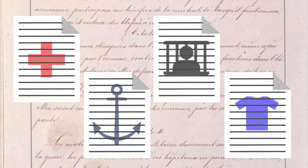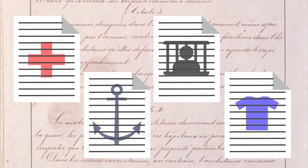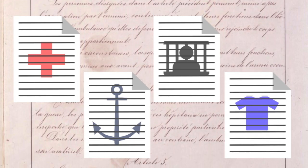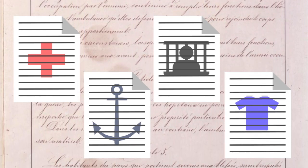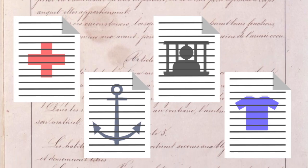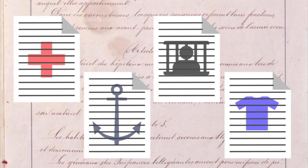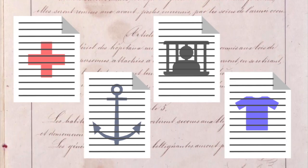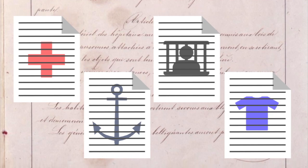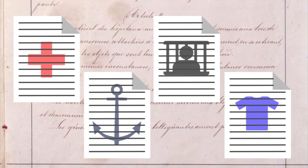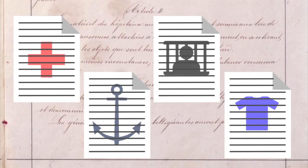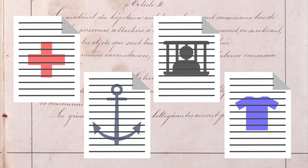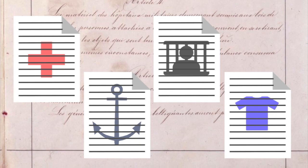And the fourth convention, signed in 1949, establishes the rights and protections afforded to civilians and non-combatants. However, do keep in mind that that was a super simplified summary of the four, and the first three were also modified slightly when the fourth was signed.